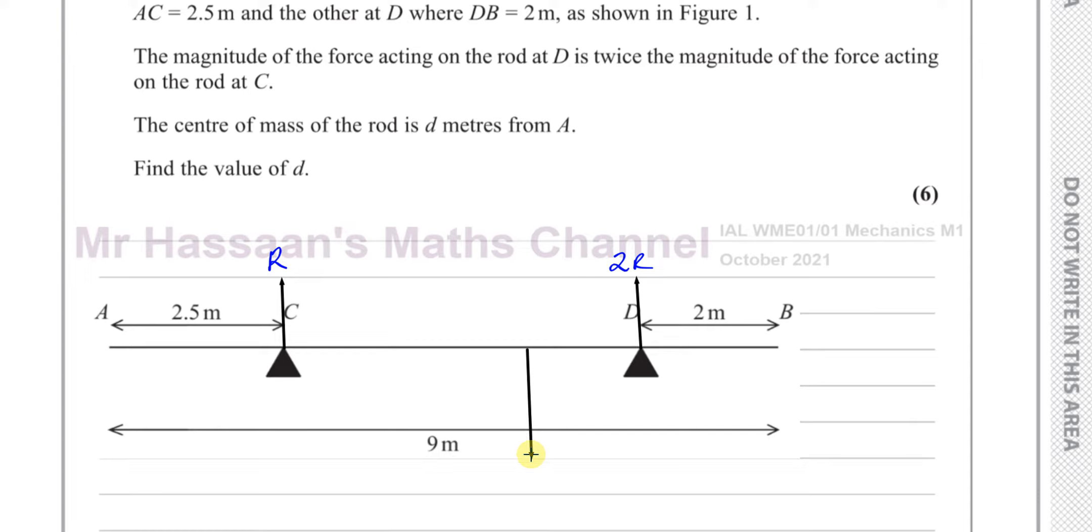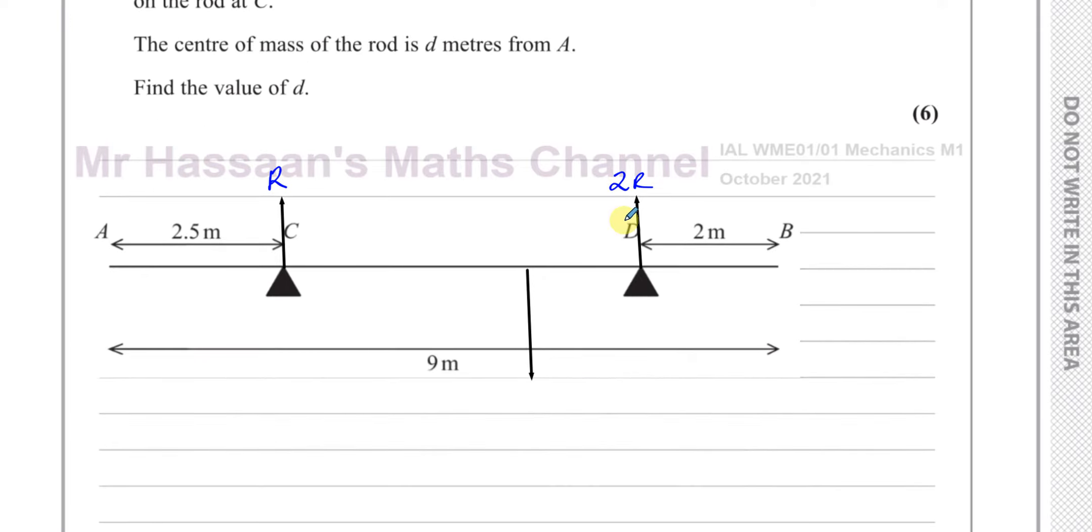We don't know exactly where it is but I'll just put it anywhere, randomly somewhere over there. So this is going to be the mass which is M kilograms. That's M times G Newtons. That's the weight.